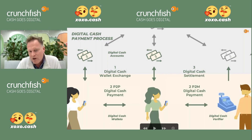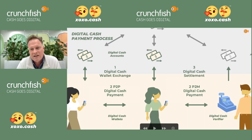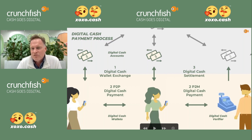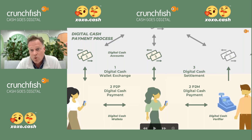Step two is digital cash payments — either P2P or P2M. Step three is digital cash settlement, where we do the online settlement and move money between accounts. Settlement can be either a pull or a push: it could come from the payer going online first, or it could be done by the receiver. The switch ensures we debit the payer only once and credit the beneficiary only once.